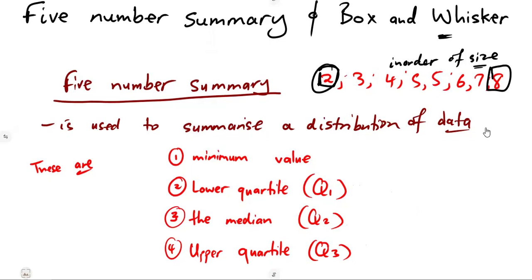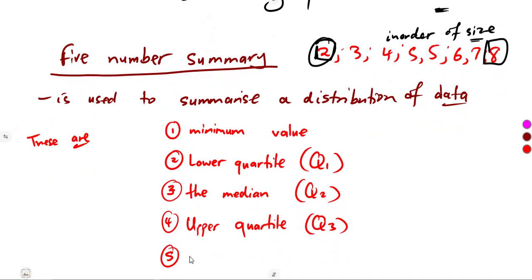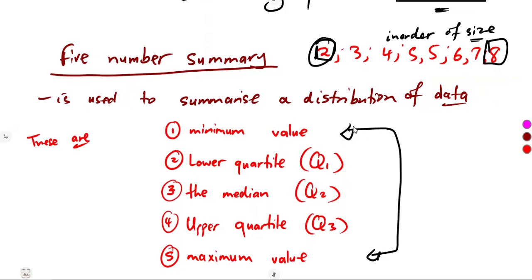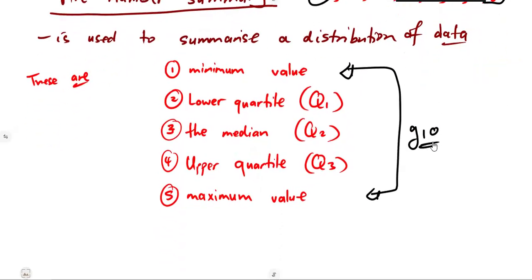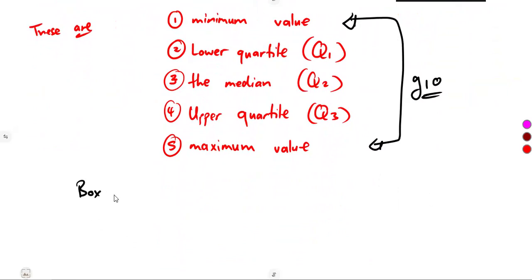The last part is the maximum value — that is our fifth value. All these numbers from grade 10 mathematics you dealt with — how to calculate each one. These are the same numbers that are being represented on the box and whisker plot.